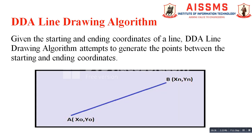In the DDA algorithm, the coordinates of the starting point and ending point of the line are given to us. As you can see in this figure, A is the starting point with coordinates (x0, y0), and B is the ending point with coordinates (xn, yn). The line is made up of a number of points or pixels, and our goal is to find the coordinates of all the points between A and B in order to generate line AB.